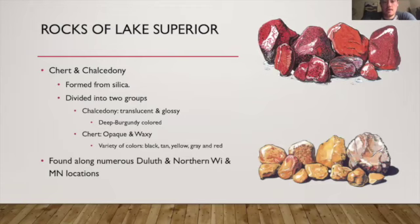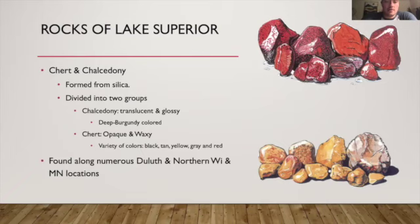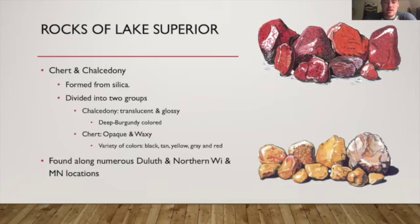First up, we have chert and chalcedony. These are formed from silica — a microscopic grain material that almost looks like sand and is often part of what you'd find in normal sand at a sandy beach. These are divided into two groups: chalcedony is translucent and glossy with a deep burgundy — kind of a red or maroon — color. Chert is opaque and waxy, meaning you can't really see through it and it's not shiny. These are found along numerous Duluth and northern Wisconsin beaches, as well as the North Shore of Minnesota.